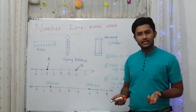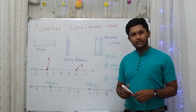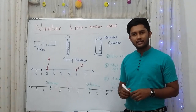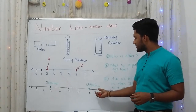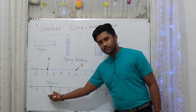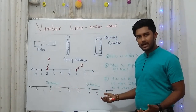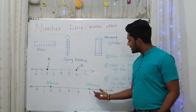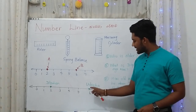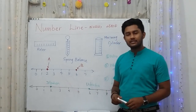Here is an example of a number line showing ages. Dilpahan's age is two years, marked on the number line. Udisha's age is six years, also marked with a dot.